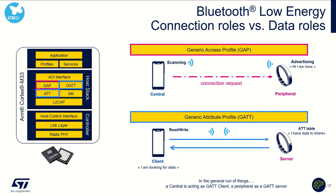Here is a BLE stack with GAP, GATT, and ATT layers, which form the host stack. The GAP layer defines the roles a device plays in the topology. In general, there is a peripheral and a central. The peripheral is a device which is advertising — saying hello, I am here. The central, most of the time, is the smartphone which is scanning and looking to connect to the peripheral. This is the role defined at GAP level.